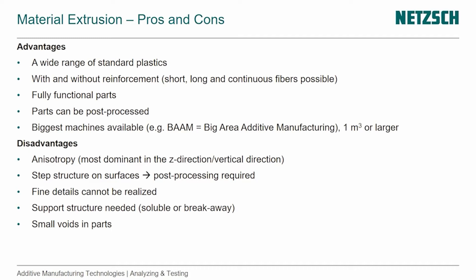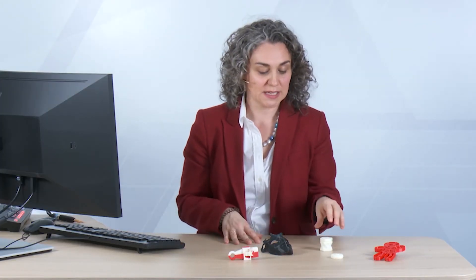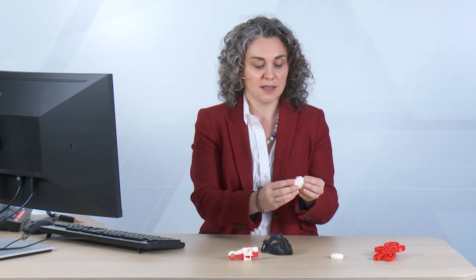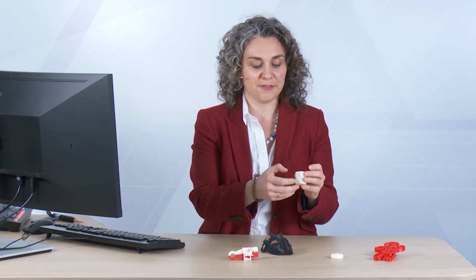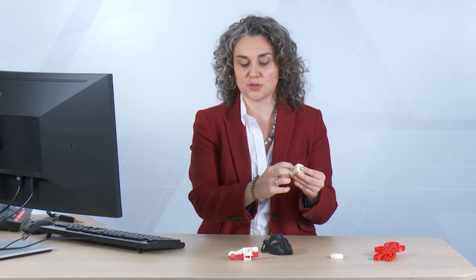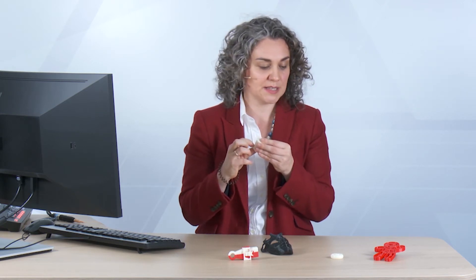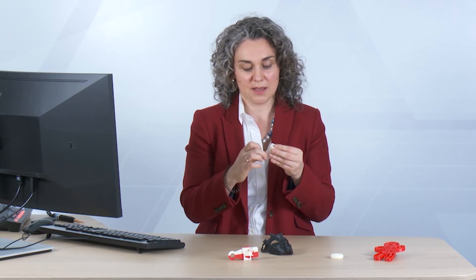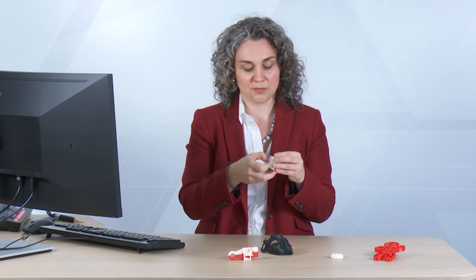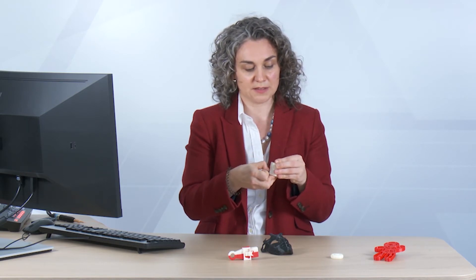Disadvantages of the process are definitely the anisotropy, which is most dominant in the C direction — so between layers. We also have a step structure on the surface which requires post-processing. It's good that we can do it, but we also have to do it. If you move your finger across the surface of some parts, you can even hear the stair-step structure because it scratches.